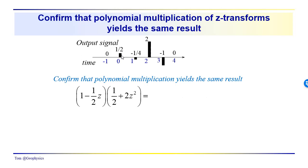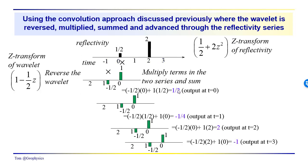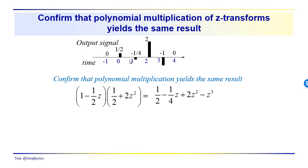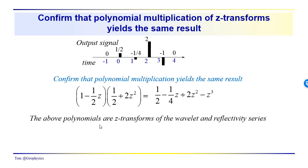Going through graphically, we determined output amplitudes of one-half, minus one-quarter, two, and minus one — seen graphically and also as coefficients at sample values zero, one, two, and three through the polynomial multiplication process, giving us the output signal. This is just one additional approach — one additional way of looking at what convolution is.